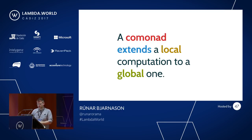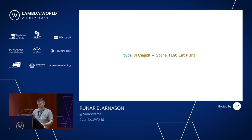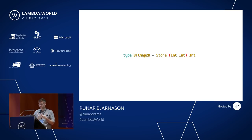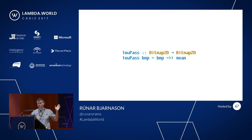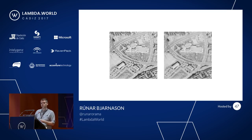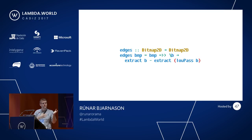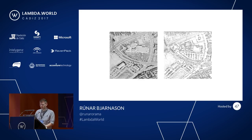A comonad extends a local computation into a global one. Imagine the store is a two-dimensional bitmap — a store full of integers indexed by pairs of integers (X and Y coordinates), like an infinite bitmap. We can write a low-pass filter: implementing a mean function that looks at the current pixel (the cursor) and takes the average of surrounding immediate neighbors. If we extend that over the whole bitmap using our comonad, we get a low-pass filter — turning a sharp image into a blurry one. Taking the difference between the low-pass filter and the identity and extending over the bitmap gives us an edge detector.